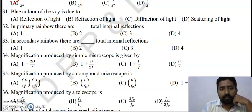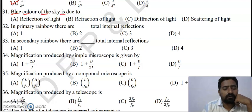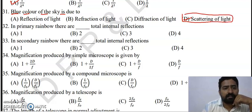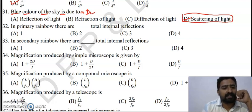Question 31: The blue color of the sky is due to scattering of light. Option D is the right answer.